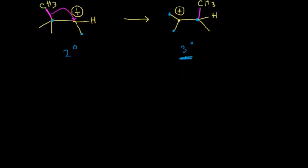The other type of rearrangement is a hydride shift. A hydride is a hydrogen with two electrons, giving it a negative one formal charge — so we call it a hydride anion. Hydrogen normally has one electron, so two electrons gives it an overall negative charge.